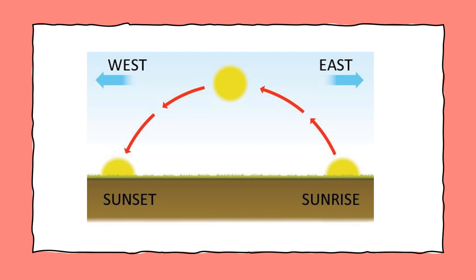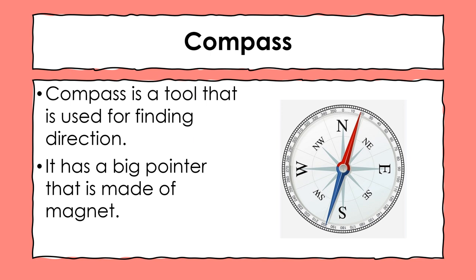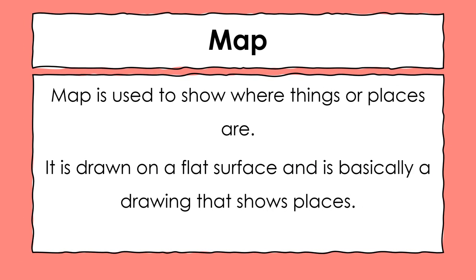If we don't know the direction of sunrise, we can use a tool that helps us find directions, and that tool is called a compass. A compass is a tool used for finding directions. Here is a picture of one — there is a big needle in the middle, and this needle is made of magnet, which helps us know the directions. It is round in shape and has a big needle or pointer in the middle that points towards the direction.